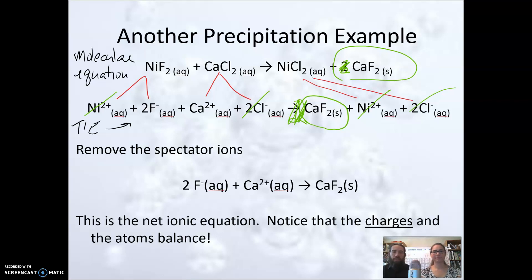And what this is telling us is we needed fluoride ions and calcium ions to make calcium fluoride. Now we just happened to use nickel fluoride. We didn't have to use nickel fluoride. We could have used sodium fluoride. Same thing with the calcium ions, we used calcium chloride, but we could have used a different salt. Anything that was soluble.